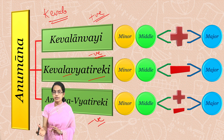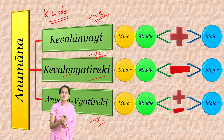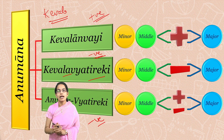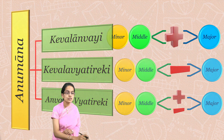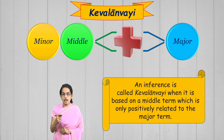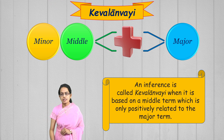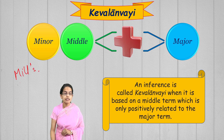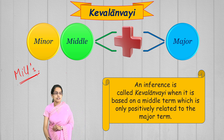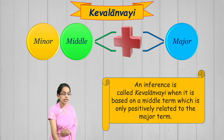The example of smoke and fire falls under Anvaya Vyatireki. These are the three types of Anuman based on application. The first, Kevalya Anvaya, has a positive relation between the middle term and the major term. Relating it to Western logic, this is based on Mill's method of agreement.